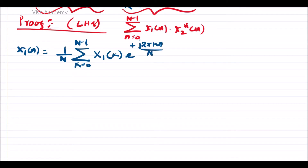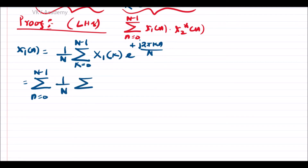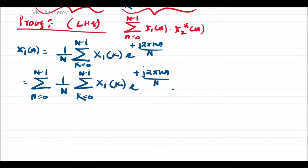This is the expression for IDFT. Now putting this expression into the equation, it can be written as summation n=0 to N-1 of [1/N · summation k=0 to N-1 of X1(k) · e^(+j2πkn/N)] · x2*(n).